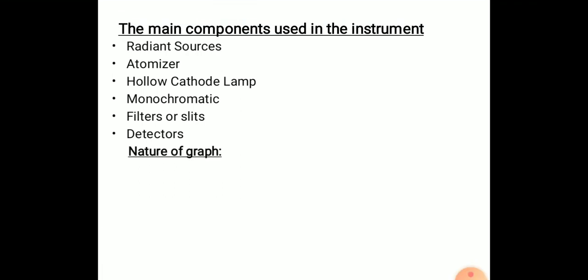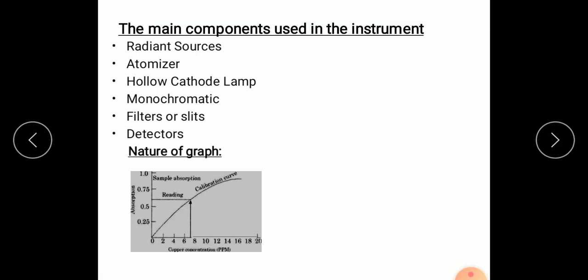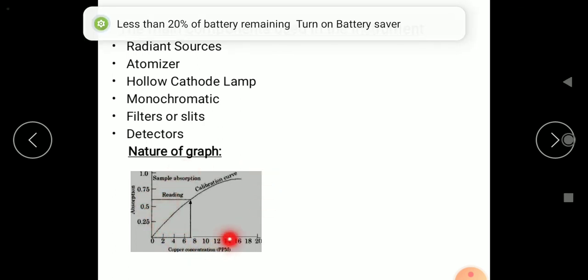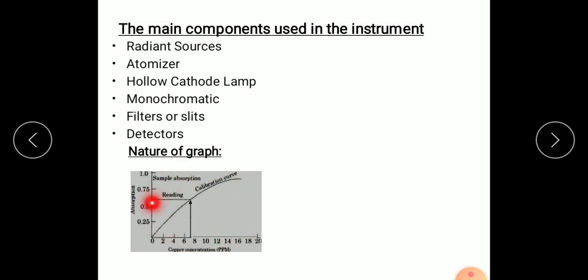Now we will study the nature of graph. Here along the y-axis we are plotting absorption and copper concentration is plotted along the x-axis. First it gives straight line and then the curve starts. So that curve is called calibration curve. By this graph we can calculate or determine the amount of copper or any metallic compound present in an unknown solution.